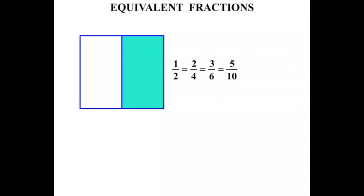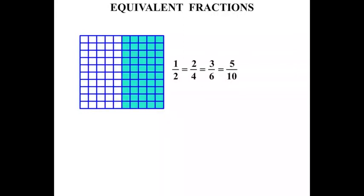Now we could continue on this way. We could break it up into 100 pieces. And if you were to count them, you'd find that 50 are shaded, so 50 hundredths.